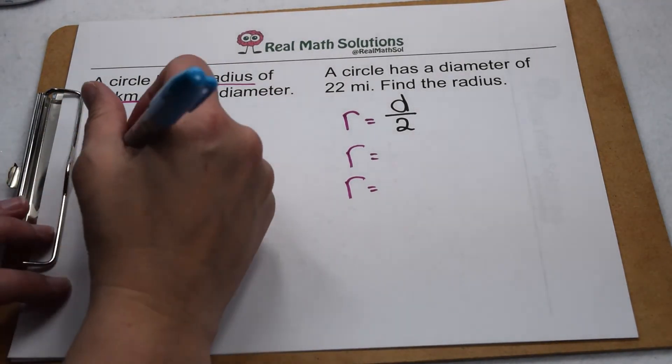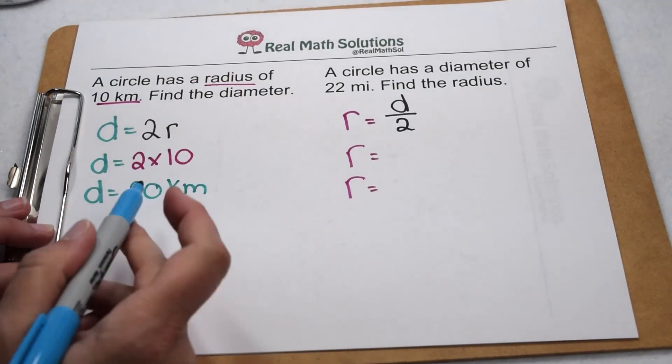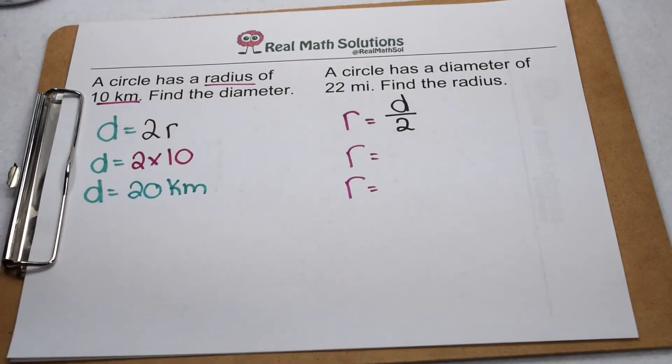When we multiply two times ten, that gives us twenty. So that tells us the diameter of this circle is going to be worth twenty kilometers. Don't forget to label.